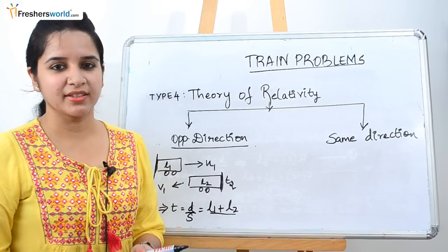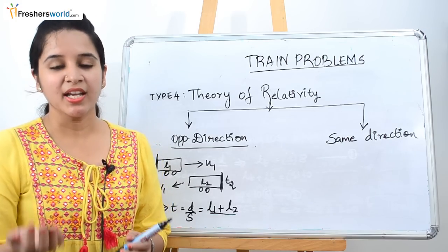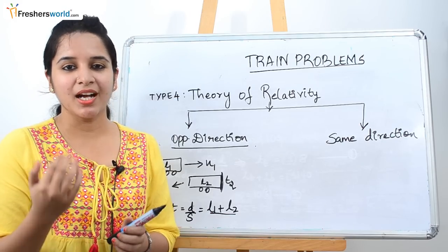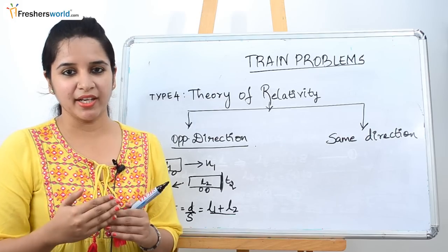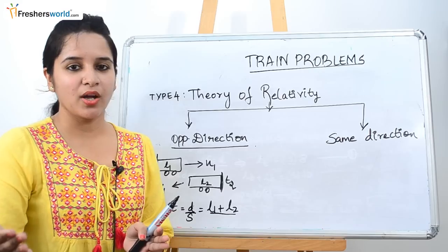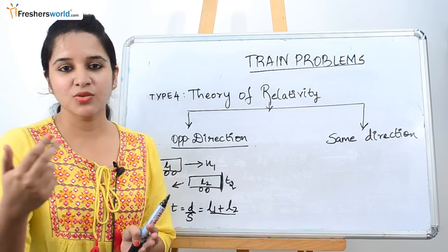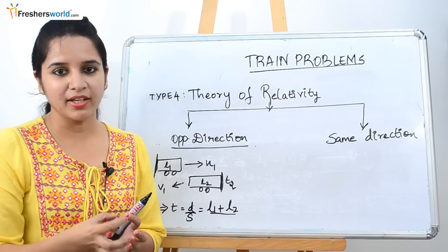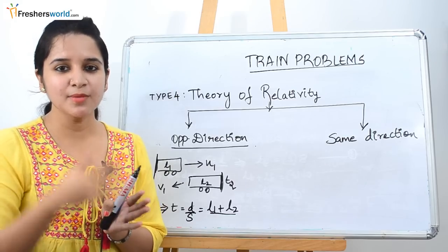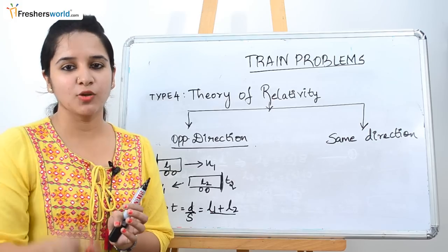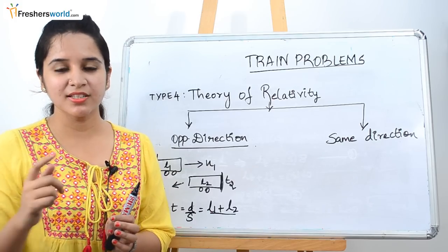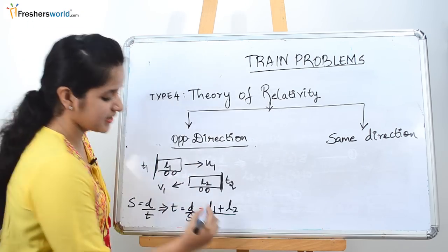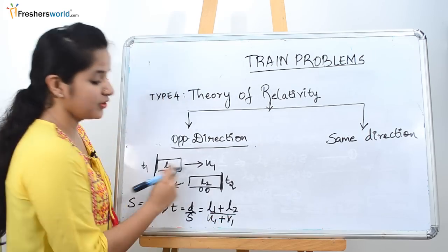A lot of people don't know why the speed is u1 plus v1. Let's say you are going in a train and you see the opposite train — even though it's going at a much lesser speed than you, you always feel it is going at a higher speed. For example, if you are going at 60 km/h and the opposite train is going at 20 km/h, you feel it is moving at 80 km/h. That's because the speeds are added: 60 plus 20 equals 80. That is why we use u1 plus v1 for the opposite direction.